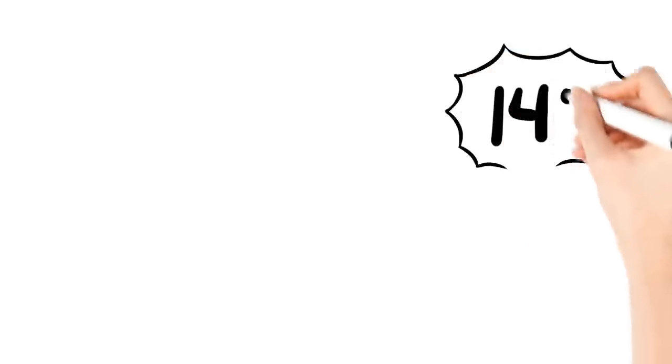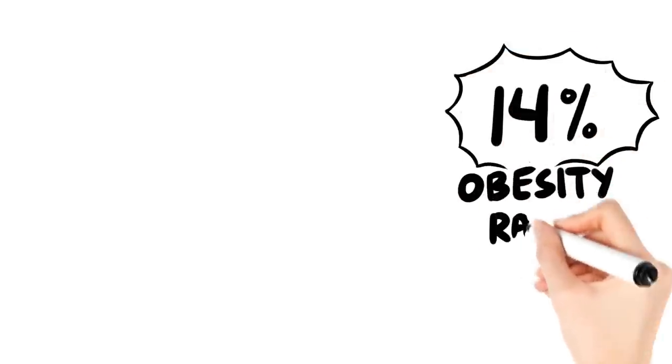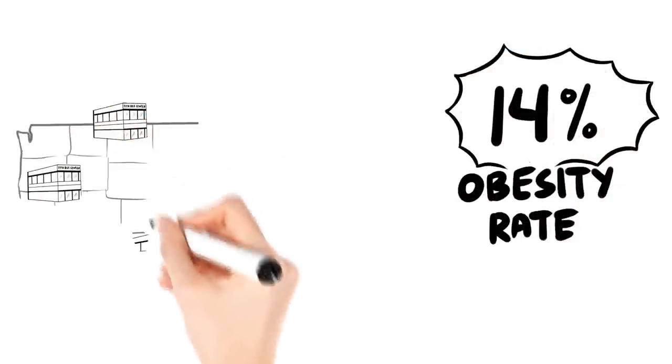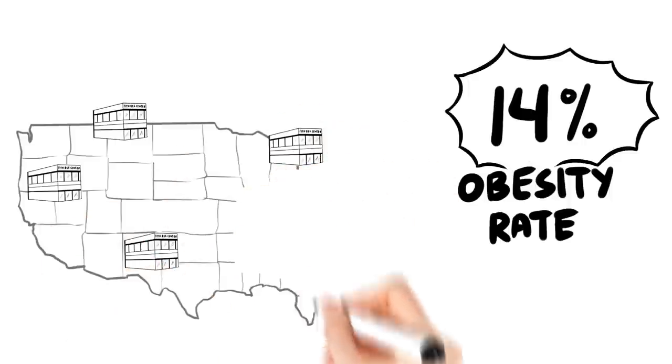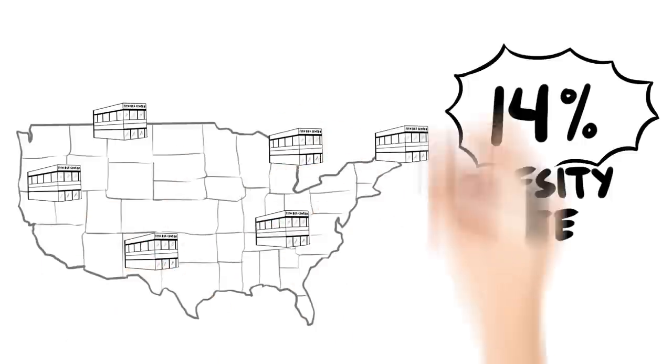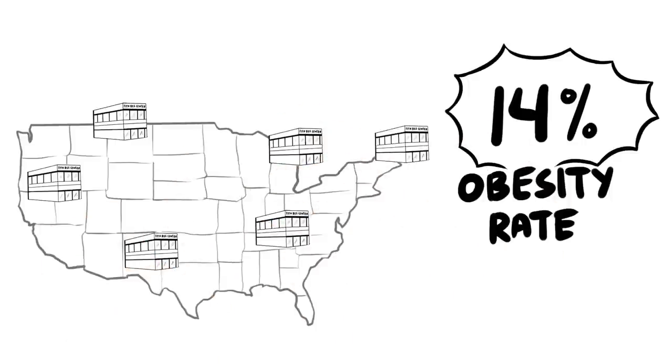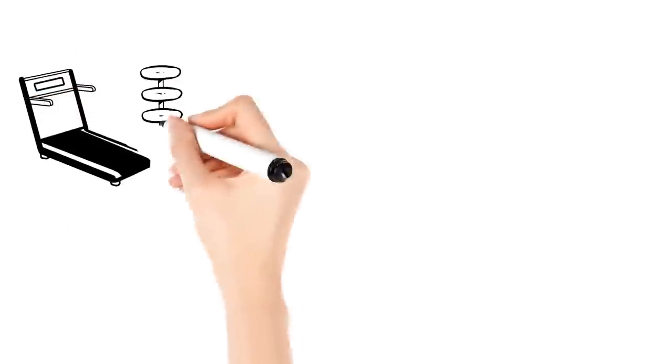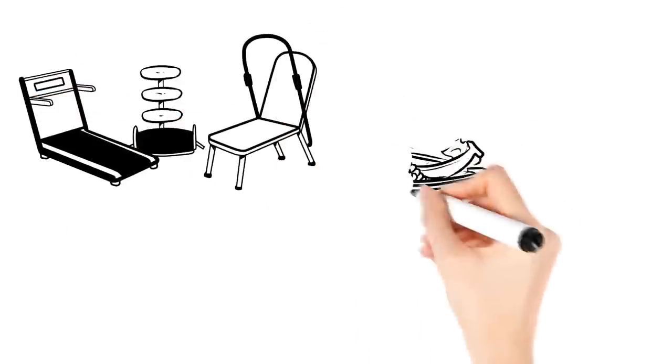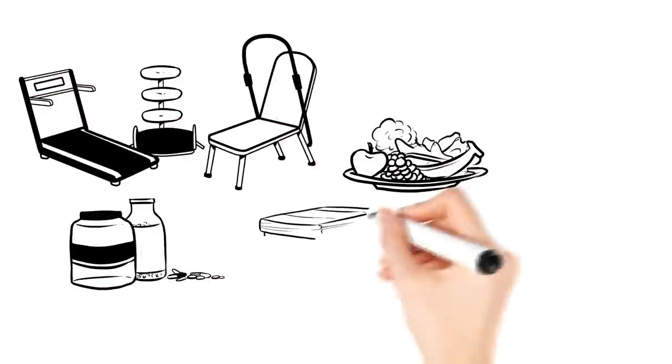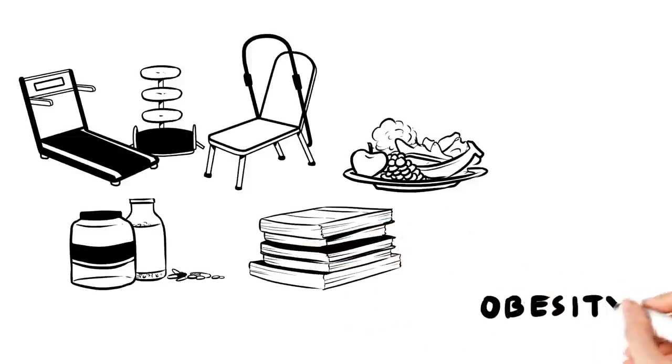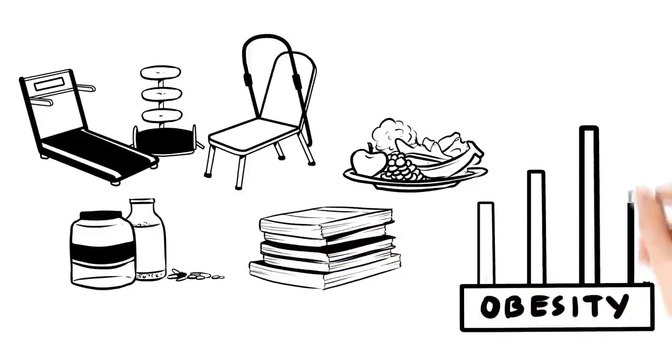Think about this. In 1970, the obesity rate in the U.S. was only 14%. Since that time, there have been hundreds of diet books written, thousands of weight loss clinics open, and more personal trainers and workout systems than we can count. But despite there being more weight loss options and more diet information available to us than ever before, the obesity rate has steadily increased every single year since 1970.